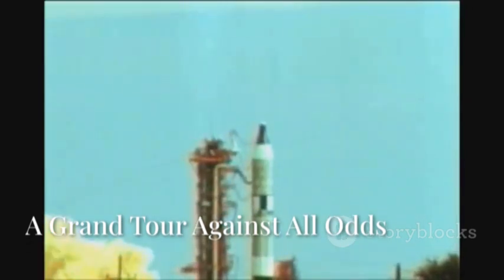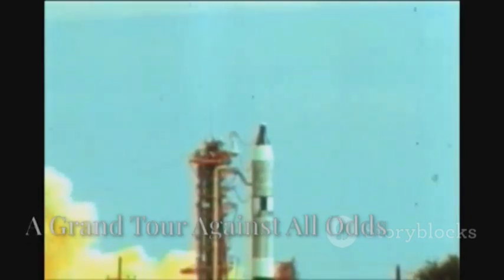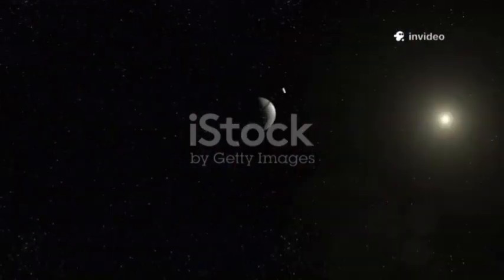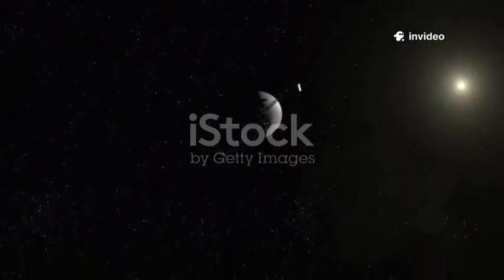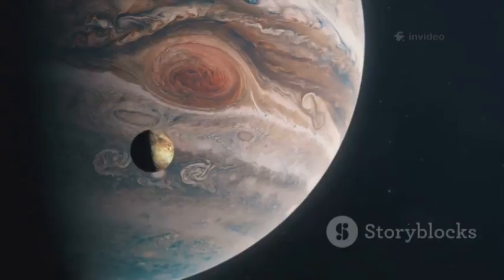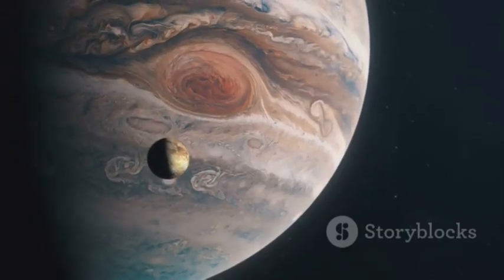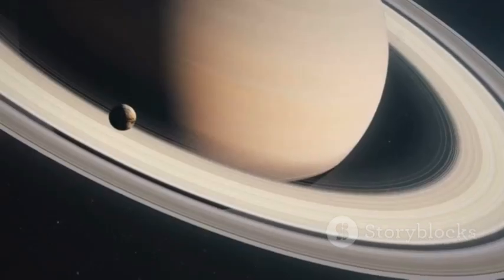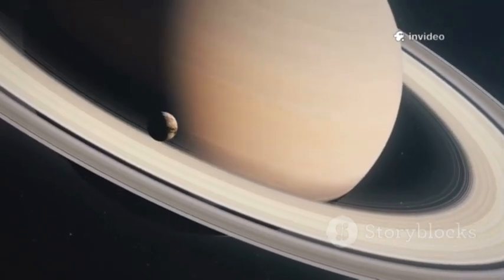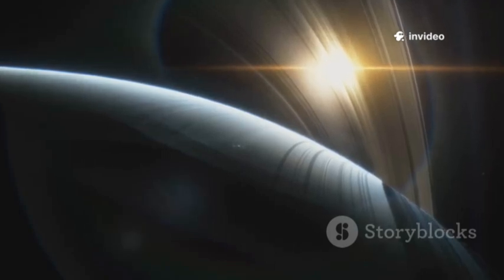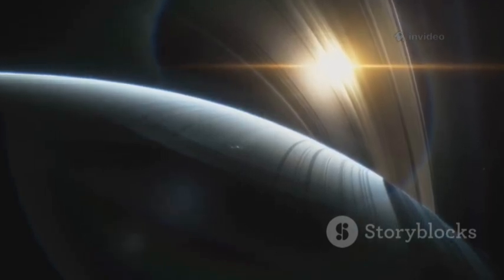Voyager 2's journey was a cosmic marathon, launched in 1977 with technology less advanced than a modern car key fob. It braved extreme temperatures and deadly radiation belts, surviving where failure seemed certain. The grand tour began with Jupiter in 1979, revealing violent storms and volcanic moons. Saturn followed with close-ups of its rings and the mysterious Titan. Each planet's gravity flung Voyager 2 onward, saving fuel and making the mission possible.